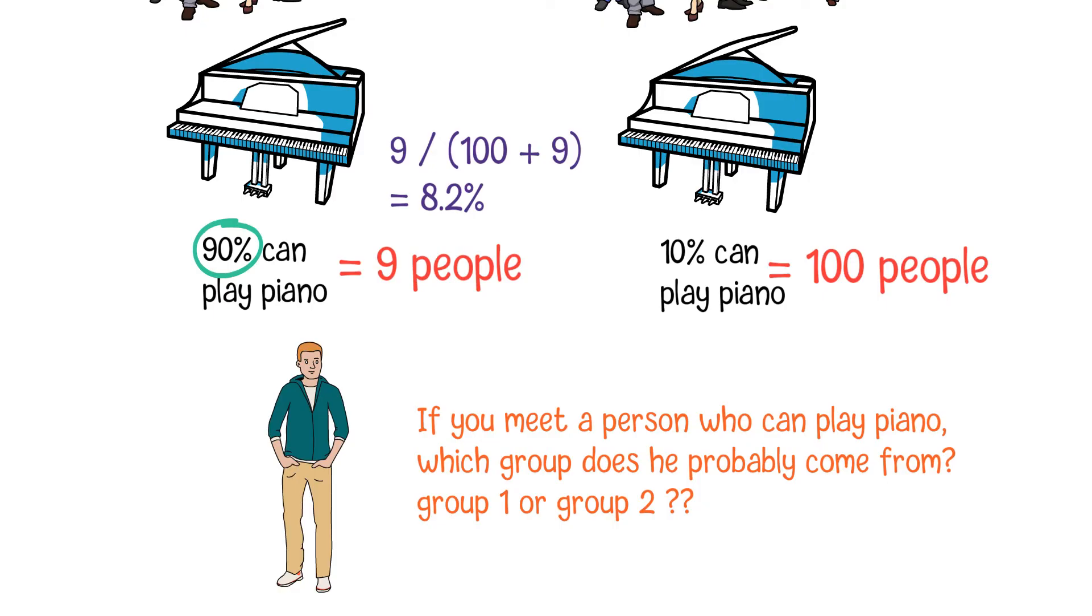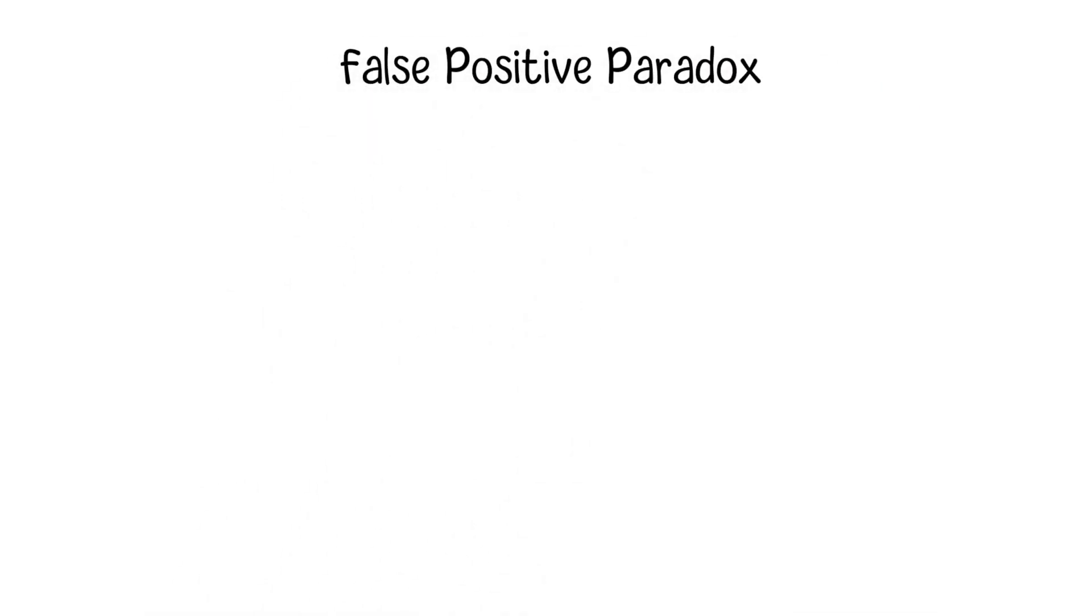So, if we only put our focus on the percentage in a group but neglect the base numbers in this group, we may make false decisions or judgments. Let's consider another example of the base rate fallacy called false positive paradox.